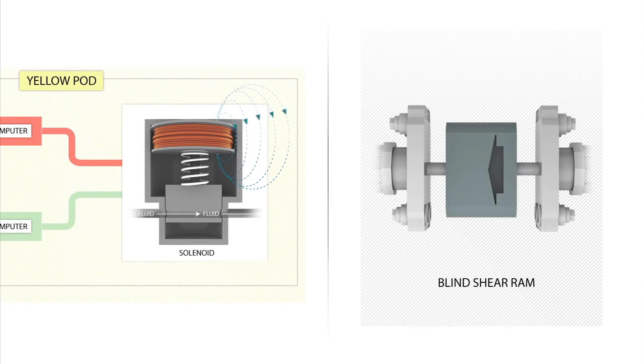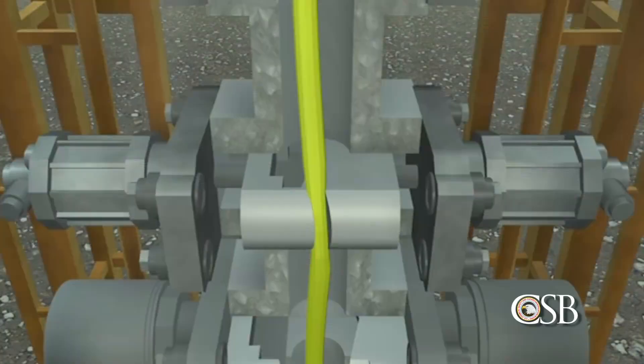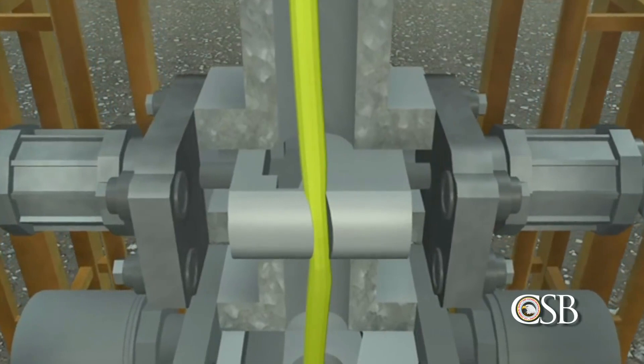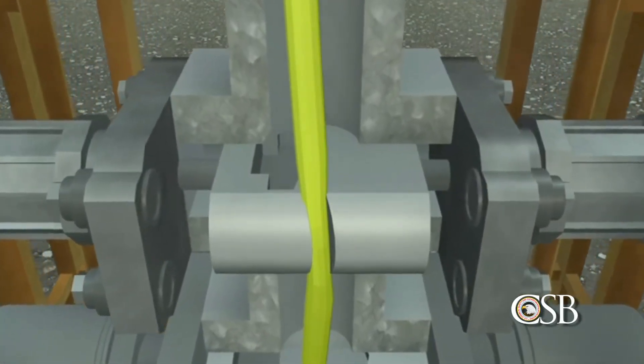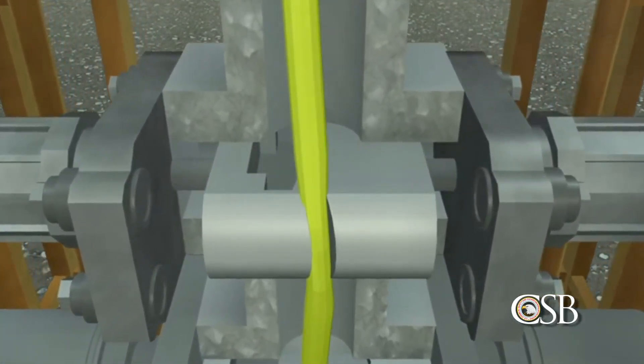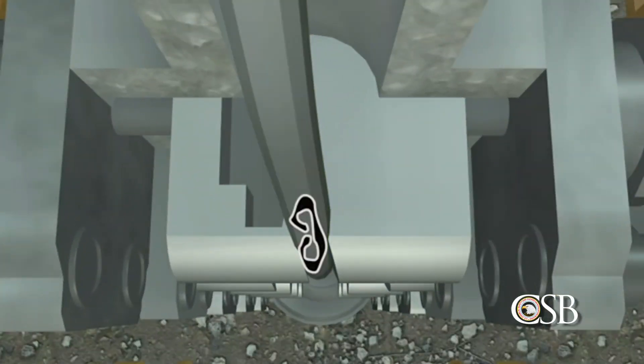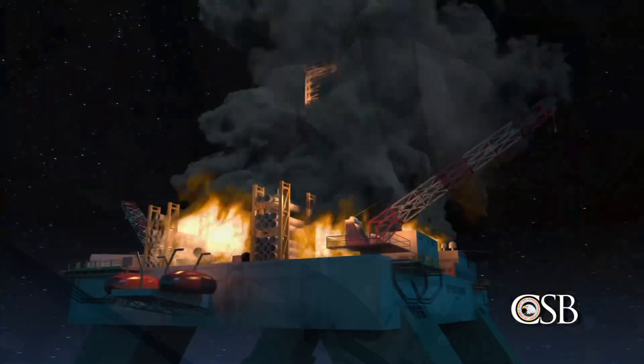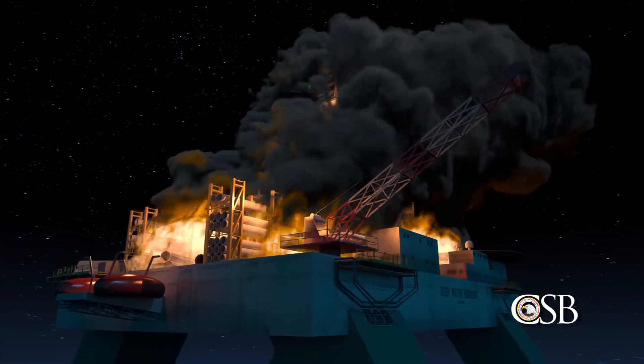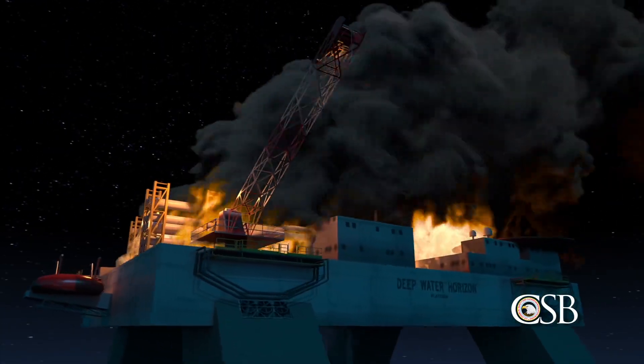This should have cut the drill pipe and sealed the well, greatly reducing the impact of the accident. But because the drill pipe was buckled and off-center inside the blowout preventer, it was trapped and only partially cut. With the failure of this last-ditch measure, there was nothing left to stop the massive oil spill and the destruction of the rig.